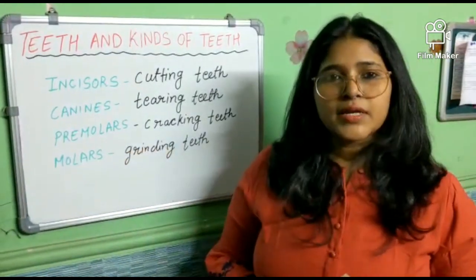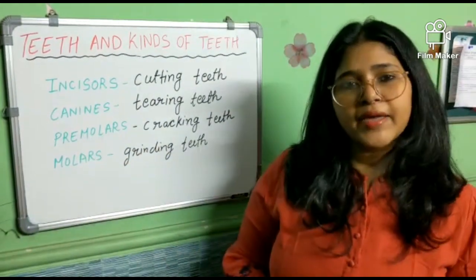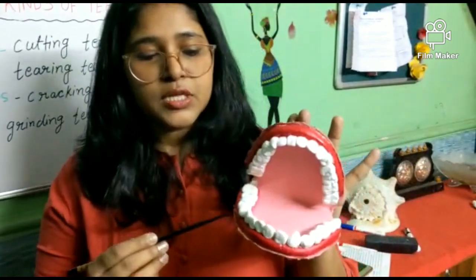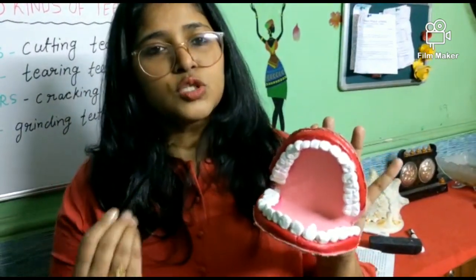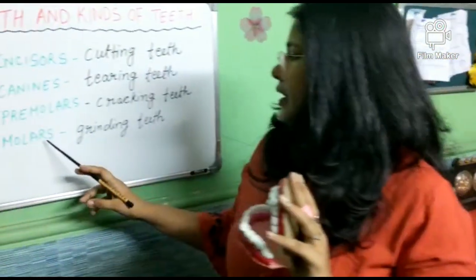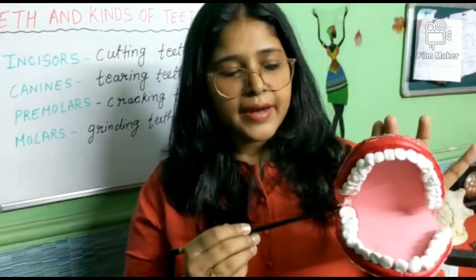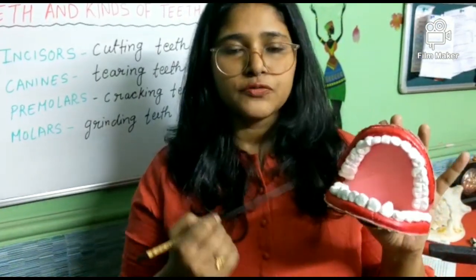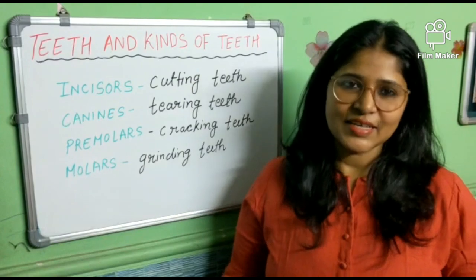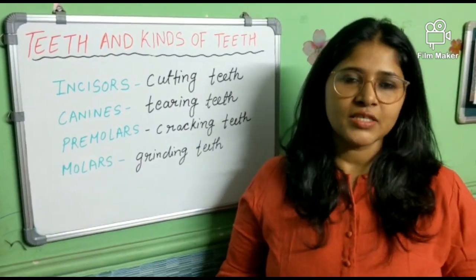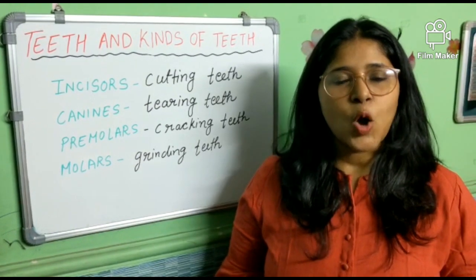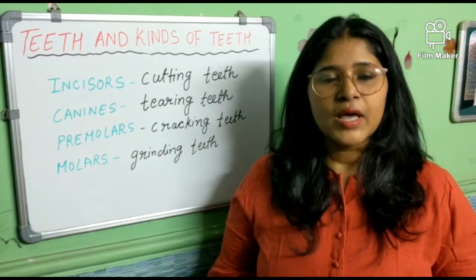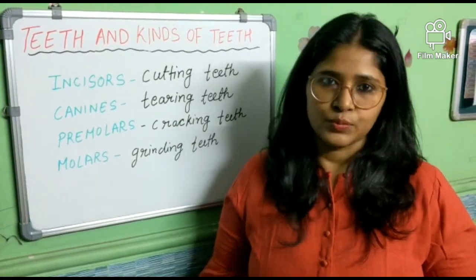Next are premolars, also known as cracking teeth. They help you to crush your food into small pieces. Next we have the molars, which are present at the back. These molars also help you to grind or crush your food into small pieces. I hope in this video you have understood the importance of teeth and the kinds of teeth. In my next video, I will explain the structure of a tooth and the microbes. Thank you.